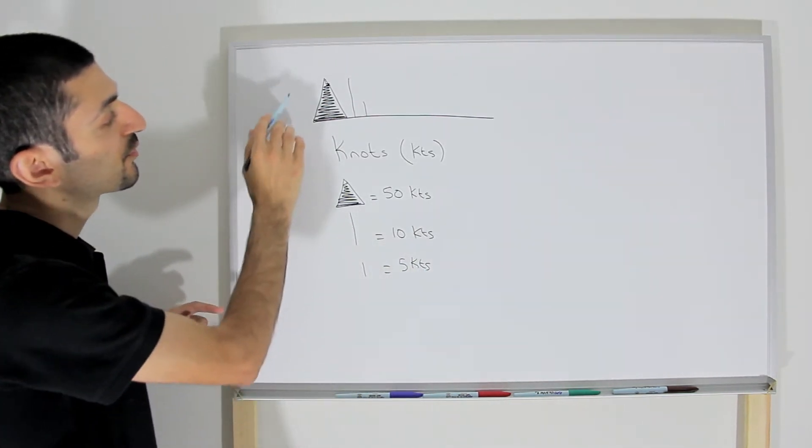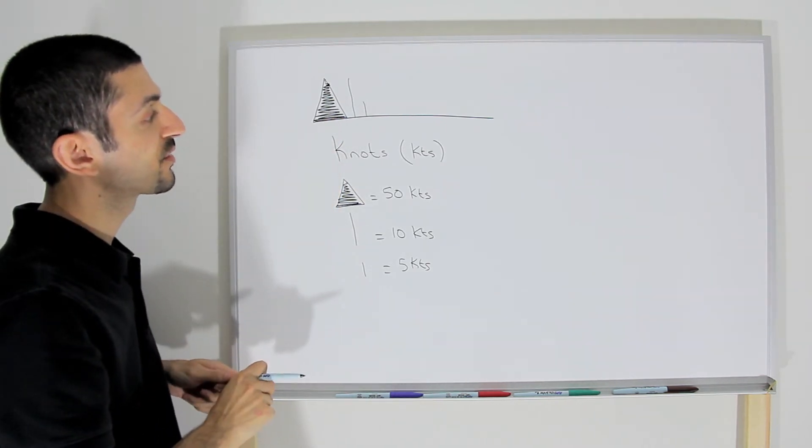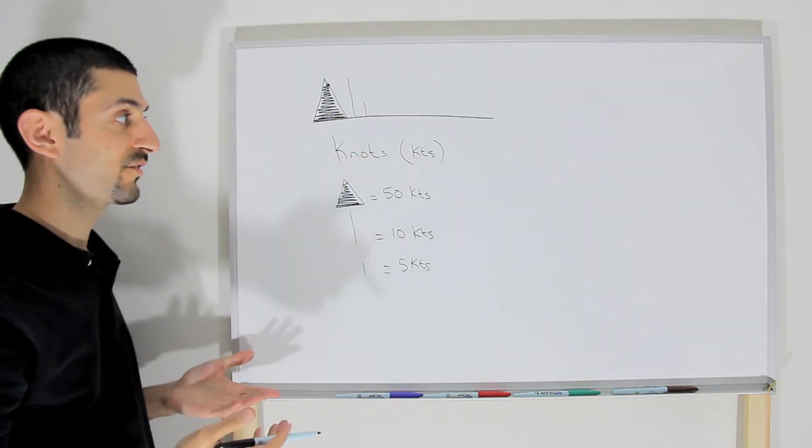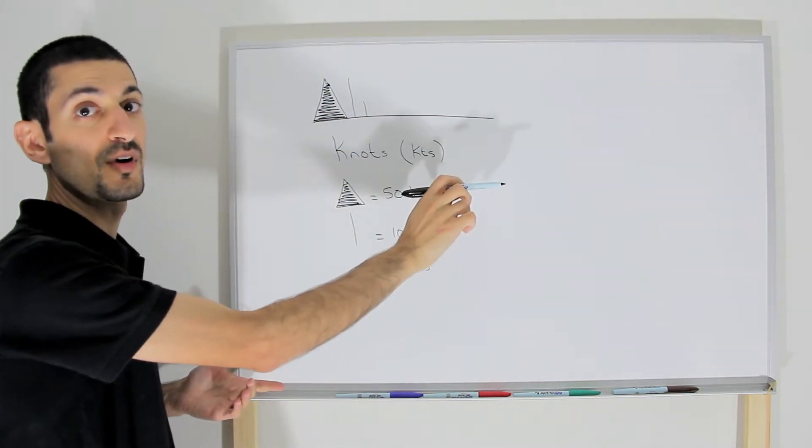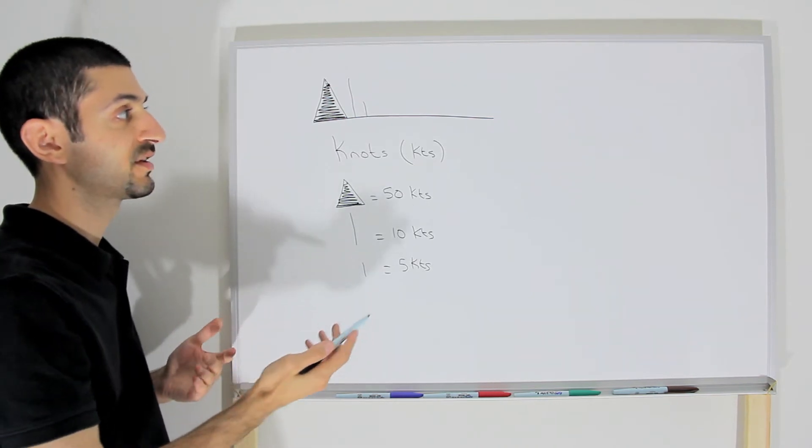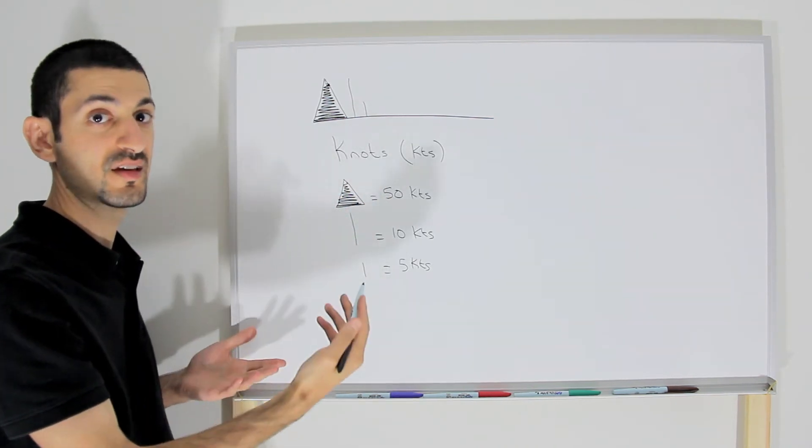So with this wind barb over here, it is indicating that the wind is moving at 50 plus 10 plus 5, or 65 knots to the right. Or if it were on a weather map by convention, it would normally be 65 knots to the east.